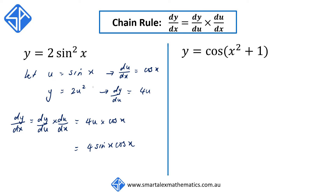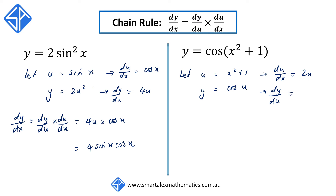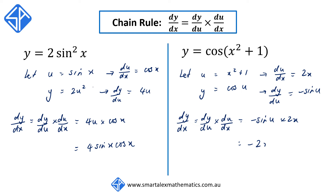The next one, we've got y is equal to cos of x squared plus 1. We let u equal to x squared plus 1 so that y is equal to cos u. From here, du/dx is equal to 2x, and dy/du is equal to negative sine u. Applying the chain rule, dy/dx equals negative sine u times 2x. Replacing u with x squared plus 1, this simplifies to negative 2x sine(x squared plus 1).